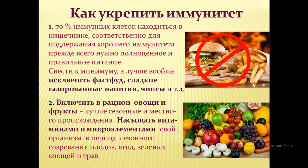Рассмотрим, как мы можем помочь организму. 70% иммунных клеток находятся в желудочно-кишечном тракте, поэтому 70% иммунитета зависит от его состояния. Соответственно, правильное и полноценное питание будет способствовать повышению иммунитета. Необходимо свести к минимуму или полностью исключить фастфуд, сладкие газированные напитки, чипсы. Способствуют укреплению иммунитета полезные овощи и фрукты, лучше сезонные, местного происхождения, богатые витаминами и микроэлементами.